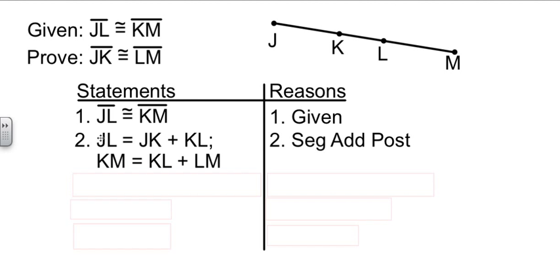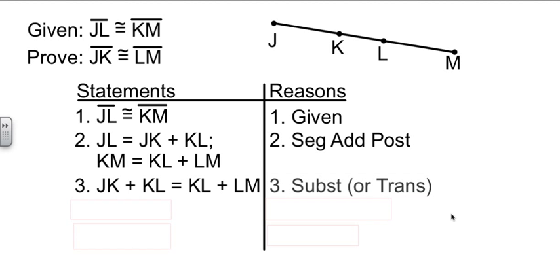Now notice what we have here. We have something that JL is equal to and we have something that KM is equal to. So I can plug those things in. I can take JL out of here and insert JK plus KL. I can take KM out of here and insert KL plus LM. And that's called the substitution property. Or you could say it's the transitive property. You wouldn't technically be wrong. Most people would think of it as substitution, but transitive works as well.